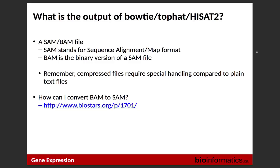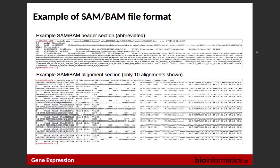The output of HiSat2 is a BAM or SAM file, which you've already seen. The header contains information about the flow cell used for sequencing, the tool and command used to run HiSat2, your sample and library name. The body contains the alignment information — every read from your FASTQ file is listed with appended alignment information: which chromosome it mapped to, the start and end position, mapping quality, and so on.